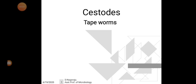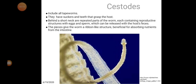Good morning. Today I am going to be discussing about cestodes, specifically Taenia solium, Taenia saginata, and Echinococcus granulosus. All three are under the Cestoda family, which includes all tapeworms. They have suckers and teeth that grasp the host. Behind a short neck are repeated parts of the worm, each containing reproductive structures with eggs and sperm, which can be released within the host.